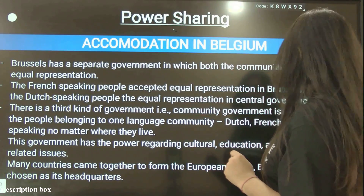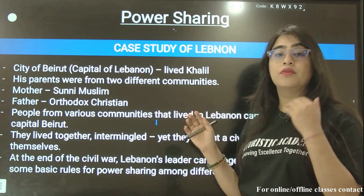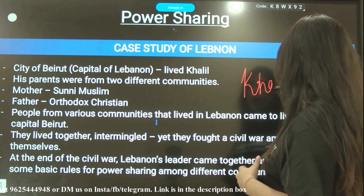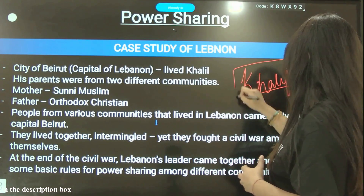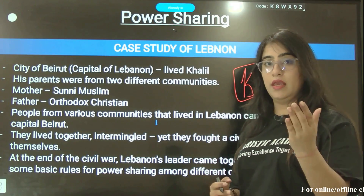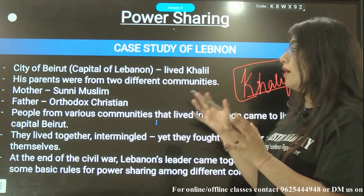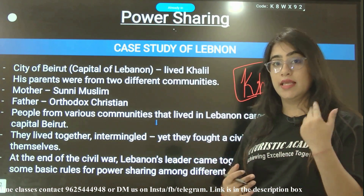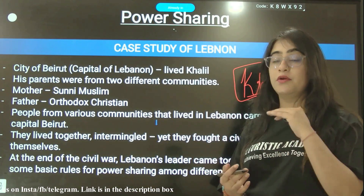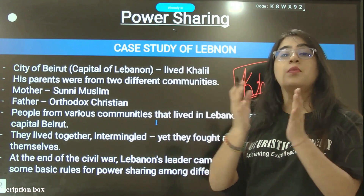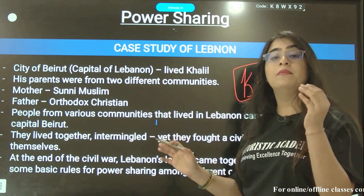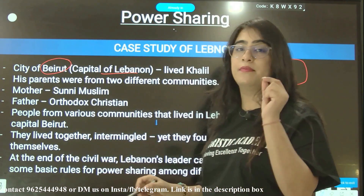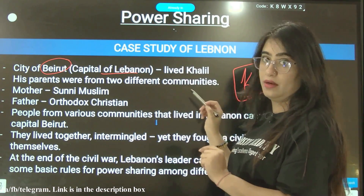Now we move to the case study of Lebanon. In the textbook there is a case study related to a boy named Khalifa. Khalifa was a child whose parents were from different communities — his mother was a Sunni Muslim and his father was an Orthodox Christian. They lived in Beirut, the capital of Lebanon. People from various communities came to live in the capital Beirut.